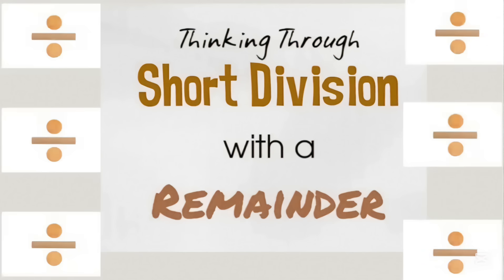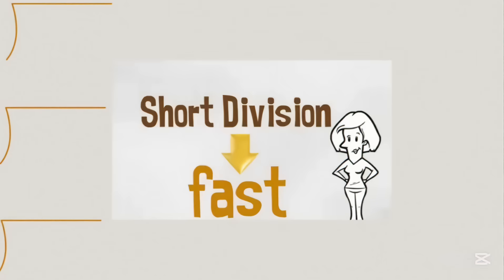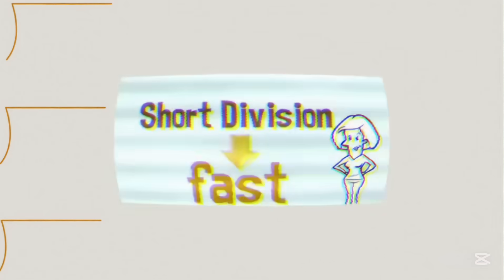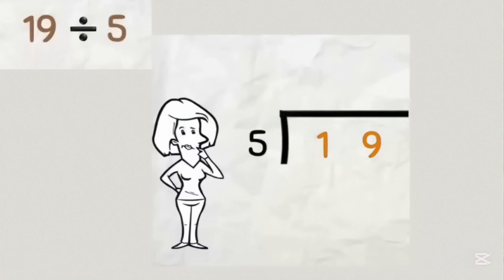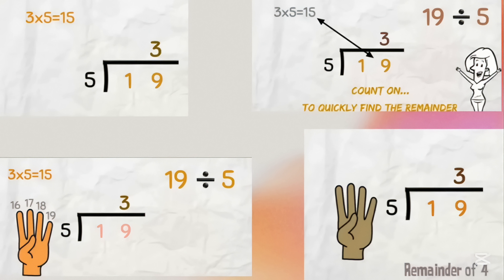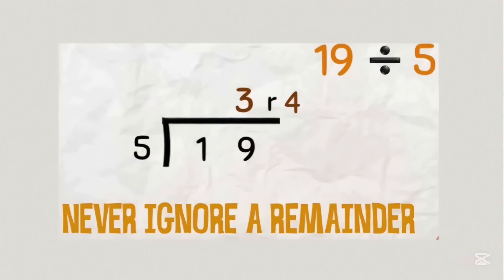Short division with a remainder. It is a fast method — here is how to use it to work very quickly with remainders. Let's start with a small one: 19 divided by 5. There are no 5s in 1, so how many 5s in 19? If you know your 5 times table you know 3 fives are 15. There is a remainder: counting on from 15 to 19 gives 4. So there is a remainder of 4. Write a little r on the answer line and put the remainder amount in. So 19 divided by 5 is 3 remainder 4. We never ignore a remainder.